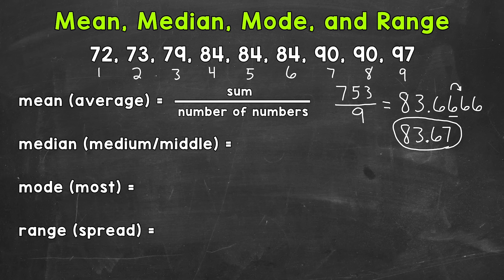So for example, we have 1, 2, 3, 4, and then 1, 2, 3, 4, giving us our middle number of 84. So the median or middle number is 84.